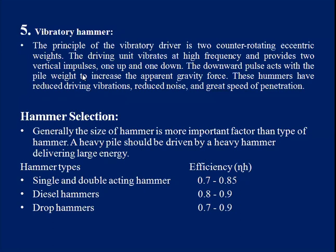Hammer selection: the size of the hammer is a more important factor than the type. A heavy pile should be driven by a heavy hammer. Hammers are generally selected on the basis of efficiency. For single and double acting hammers, efficiency lies between 0.7 to 0.85. For diesel hammers, efficiency lies between 0.8 to 0.9. For drop hammers, efficiency is 0.7 to 0.9.